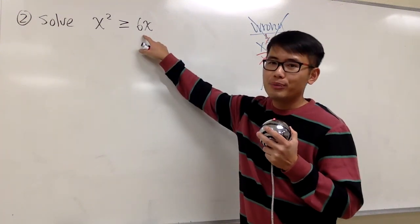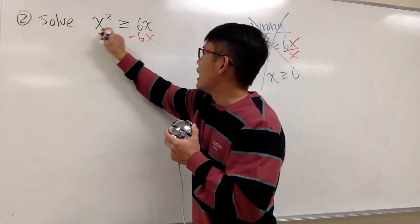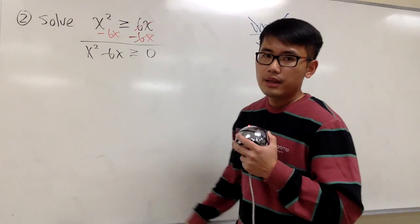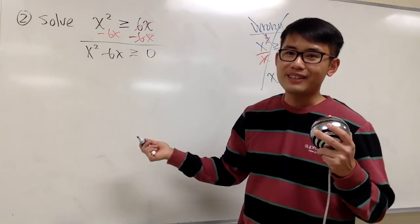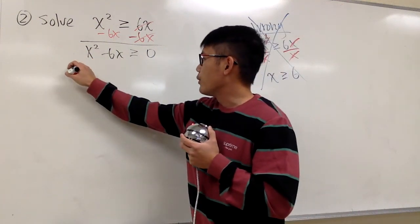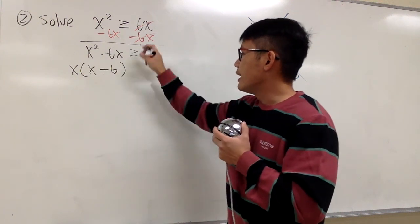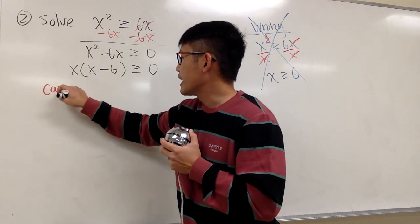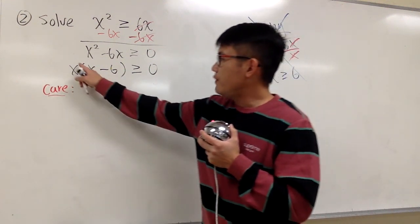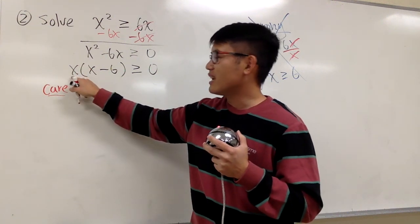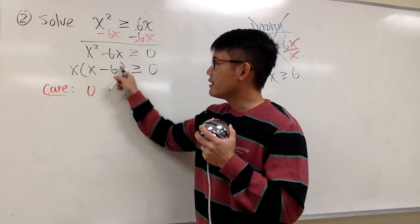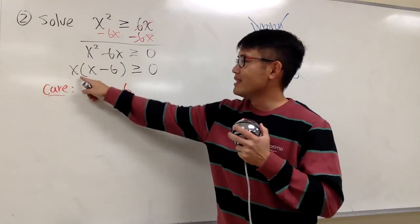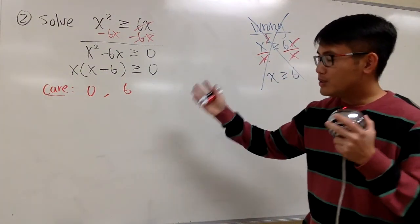Here is the correct way. We want to factor, so we subtract 6x from both sides to get x squared minus 6x greater than or equal to 0. This has two terms but we can still factor out x, giving us x(x - 6) greater than or equal to 0. Now find the critical numbers: for the first factor x = 0, and for x - 6 = 0 we need x = positive 6. Those are the two numbers we care about.